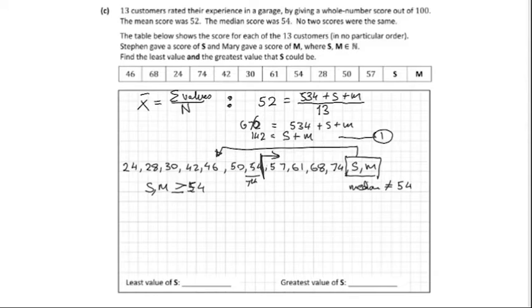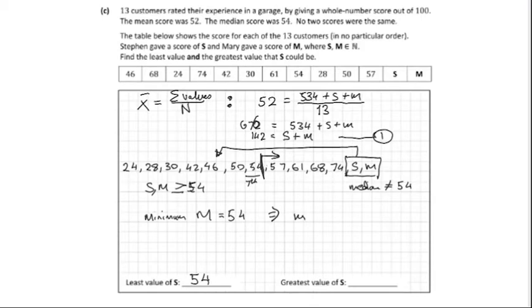Going back to equation one: if S is at its lowest value, it would be 54 — it can't go lower than 54 to retain the median of 54. For the greatest value of S, the minimum of M also has to be 54. So if M equals 54, then S max equals 142 minus 54, which gives a value of 88.